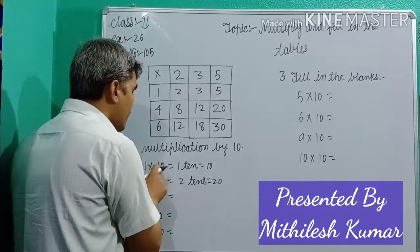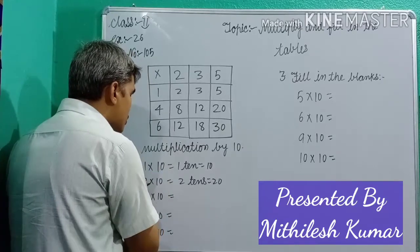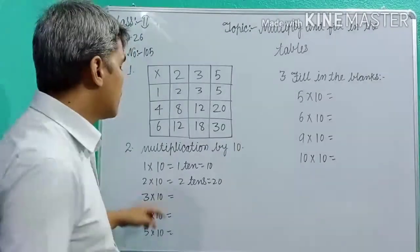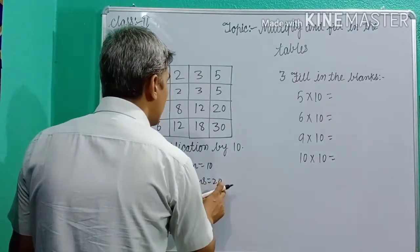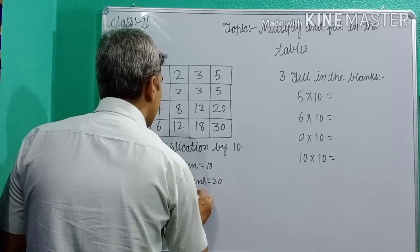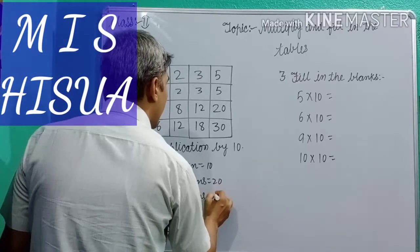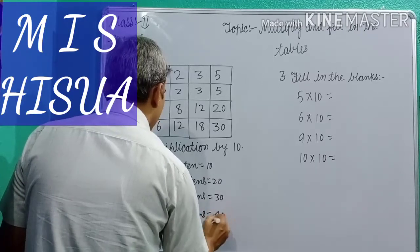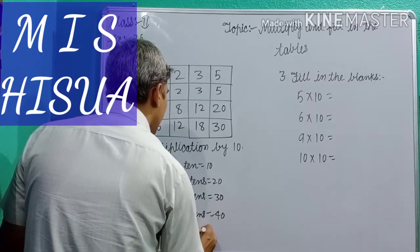But here, this is 1 and this is 10. This is 2, this is 10. And how many tens count? Here, 2 tens. That means, 2 tens is 20. 3 tens is 30. 4 tens is 40. And 5 tens is 50.